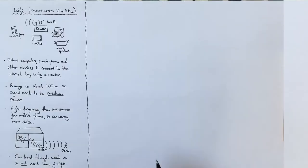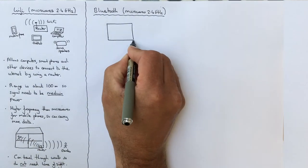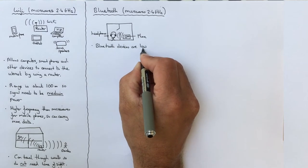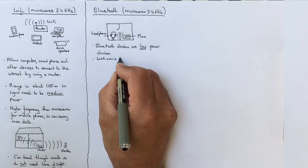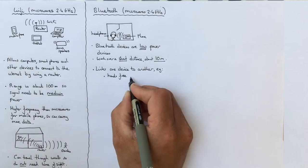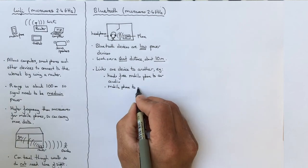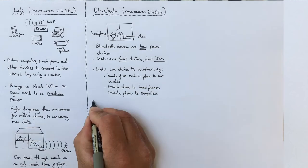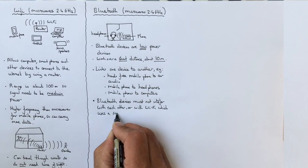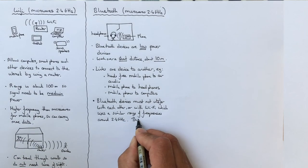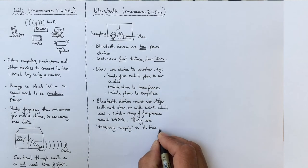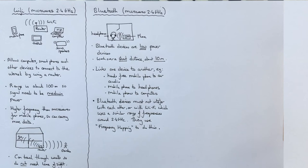Next we can look at Bluetooth. Bluetooth uses the same range of frequencies as Wi-Fi about 2.4 GHz. Because Bluetooth devices only to have a short range of about 10 meters, the devices are low power. They're used to link one device to another. For instance, hands-free mobile phone to your car audio, or mobile phone to your headphones, or mobile phones to computers. In any household, you might have many people using Bluetooth devices and it's vital that they don't interfere with each other or with the Wi-Fi which has similar frequencies. They achieve this by using something called frequency hopping, which means that they continually change from one frequency to the other. So the chance of the device being on the same frequency to interfere is very low.